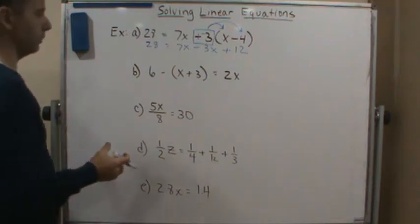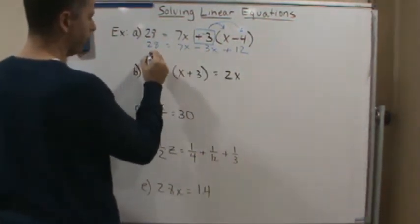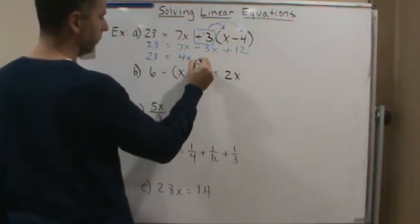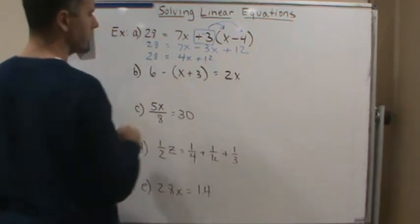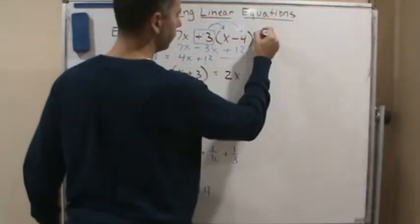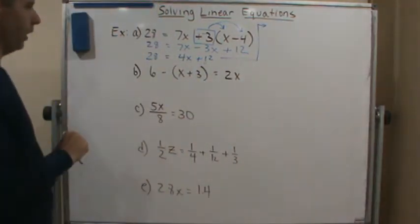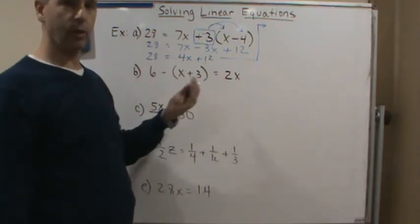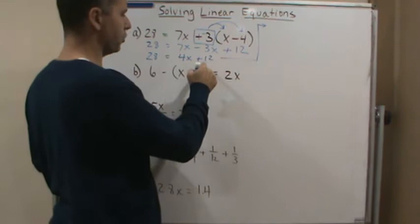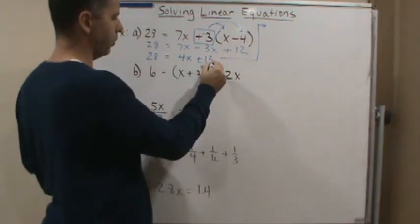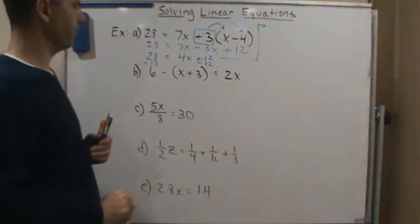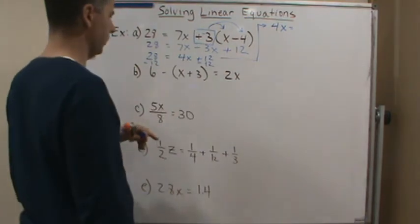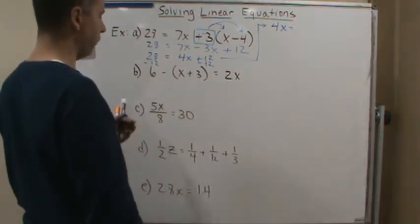Now we're going to combine like terms. We've got like terms here, so this becomes 28 equals 4x plus 12. Now we want the variable terms on one side and constant terms on the other, so we subtract 12 from both sides. That gives us 4x equals 28 minus 12, which is 16.